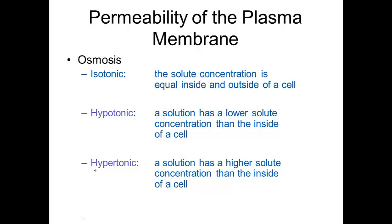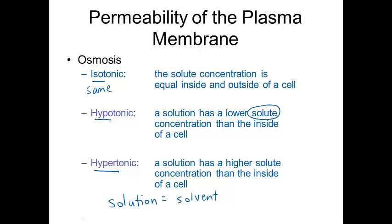To summarize: hypertonic means a higher solute concentration, hypotonic means a lower solute concentration, and isotonic means the same concentration inside and outside the cell. The solute is the substance dissolved in something else, and the solvent is what you have the most of — in most cases, water is the solvent, and the solute is the substance mixed in with it that you have less of.